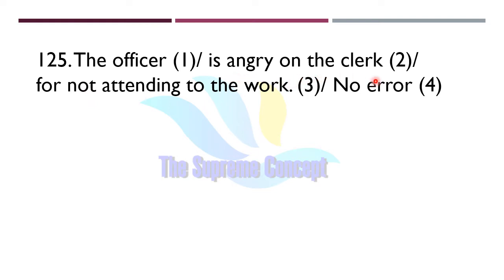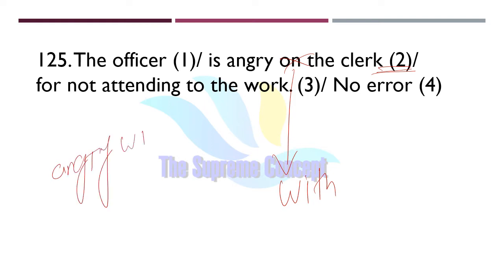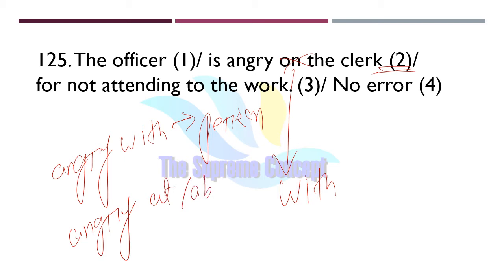Question 125: 'The official is angry on the clerk for not attending to the work.' Find out the error. The error lies in part number two — we will use 'angry with,' not 'angry on.' Angry with is used for any person, and angry at or about is used for something.